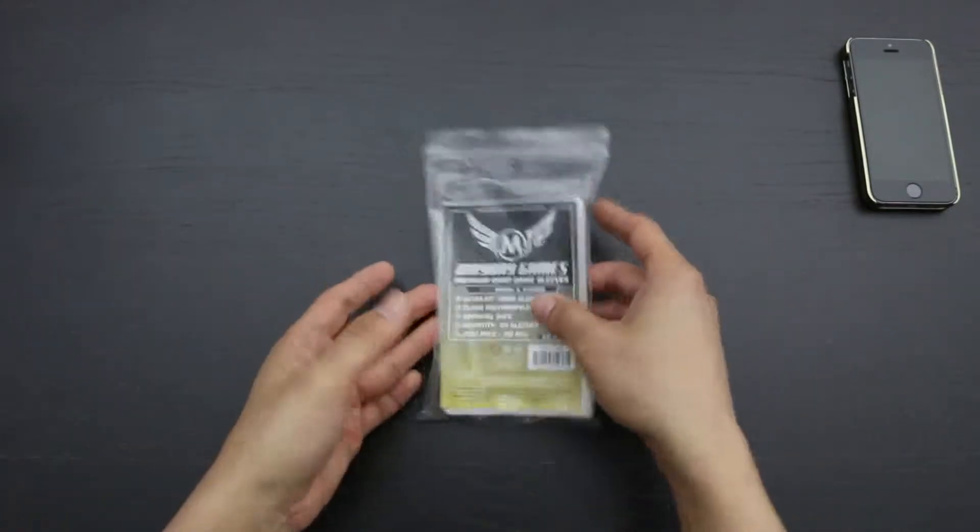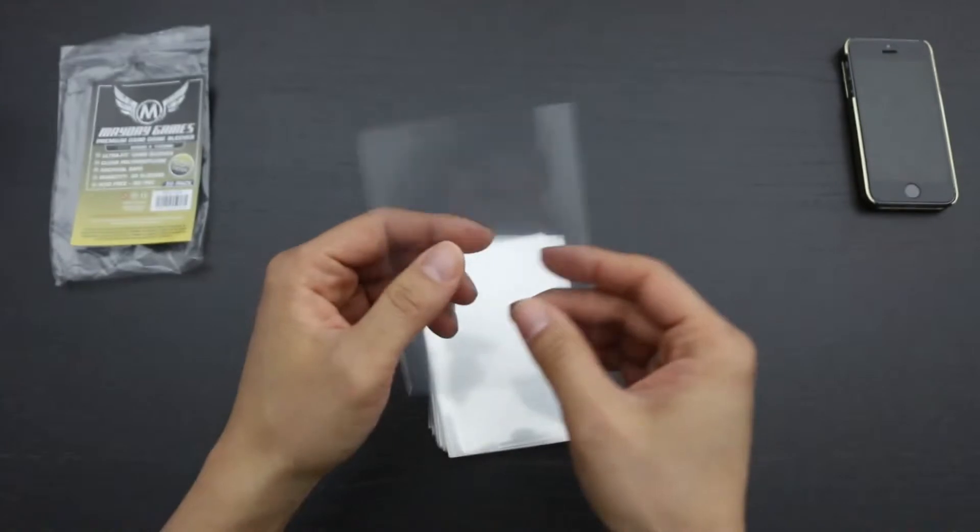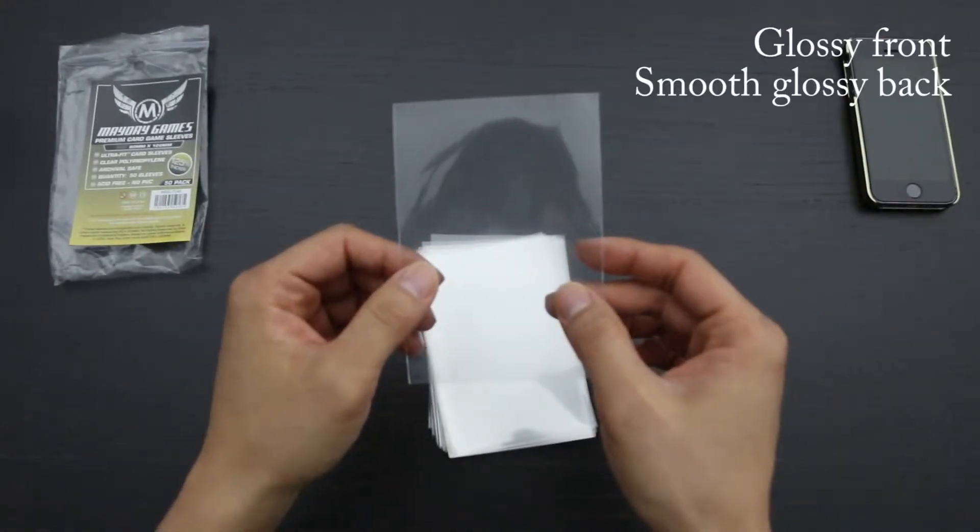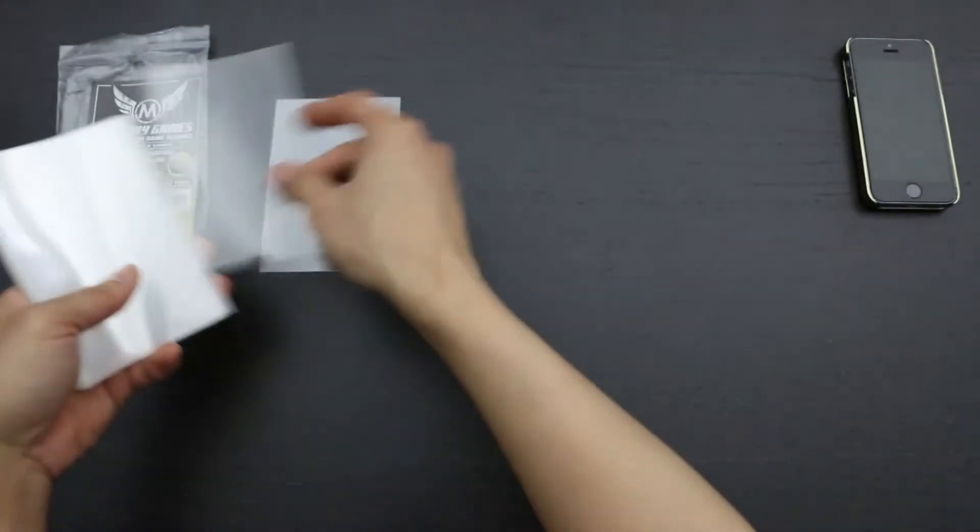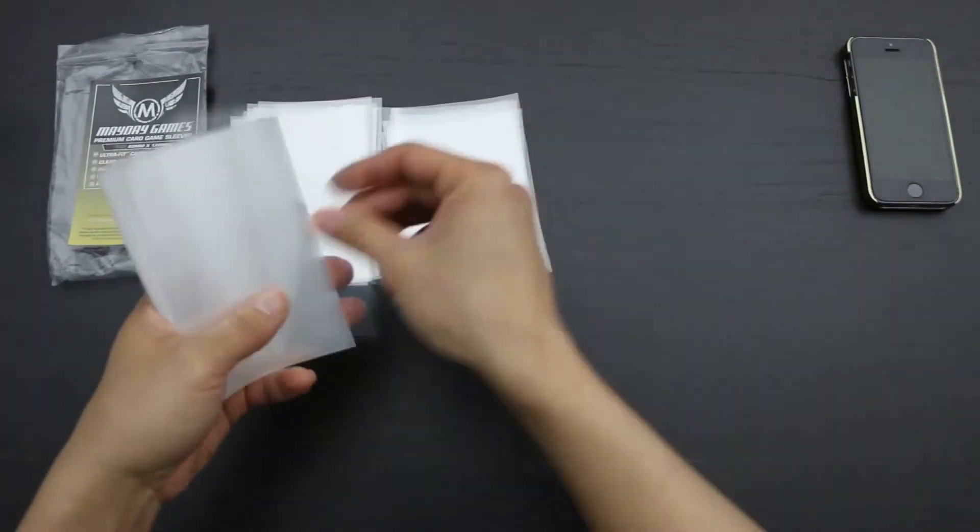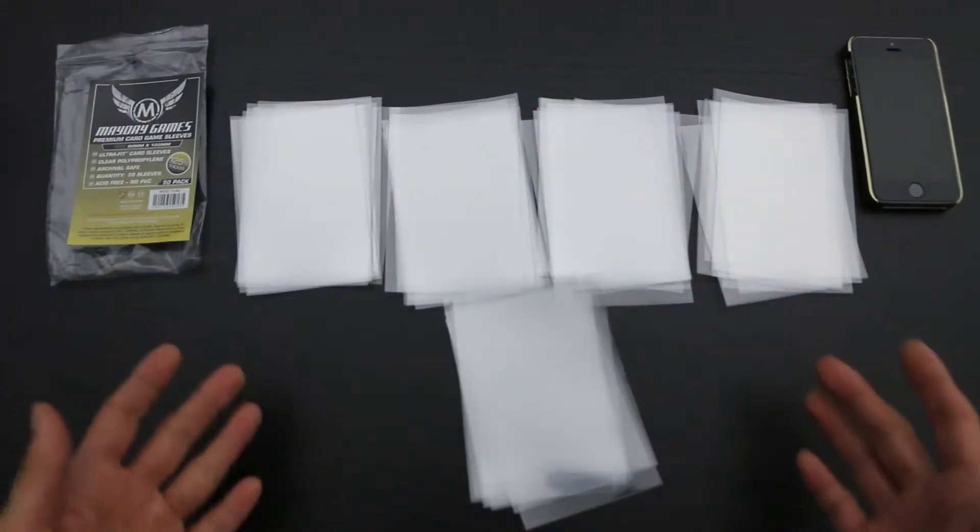Let's go ahead and take a look at what we have inside. As you can see, the sleeves are smooth and glossy on both sides. Now let's count to make sure that there are 50 sleeves here. Alright, there are exactly 50 sleeves here.